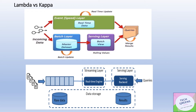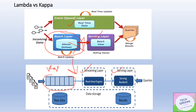Here is a comparison between Lambda and Kappa to make it more visual. In Lambda, we had a batch layer along with the speed and serving layers. In Kappa, we only have a streaming layer and the serving layer — the batch layer is removed entirely. What sets Kappa apart is the canonical store that feeds data into the streaming system in the form of immutable append-only logs.